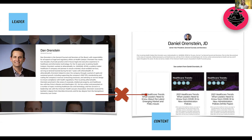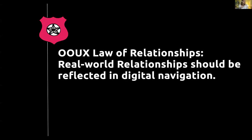What we're trying to do is map out those real-world connections so we can manifest them on our screens, because this is the most intuitive way for users to navigate — just navigate through relationships that exist in the world and in our mental models. The OUX law of relationships is: real-world relationships should be reflected in the digital navigation. The navigation flow is a way to start visualizing that.